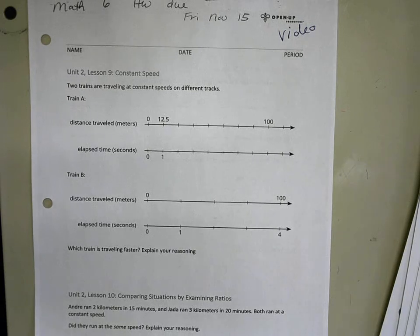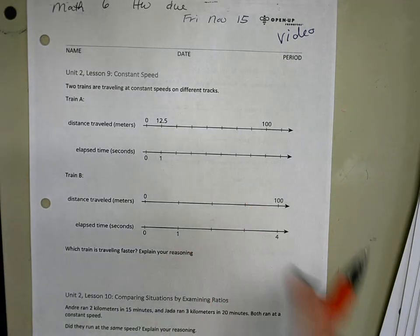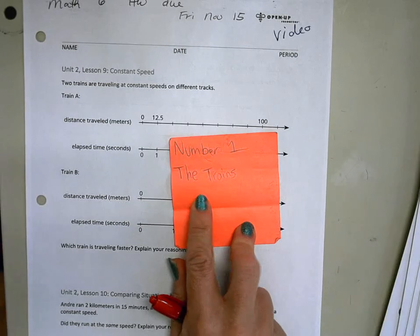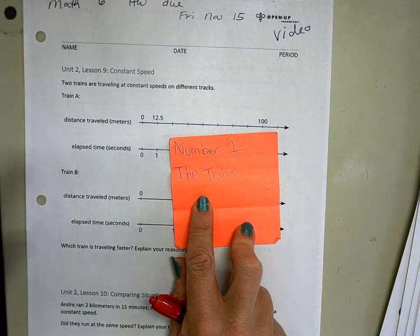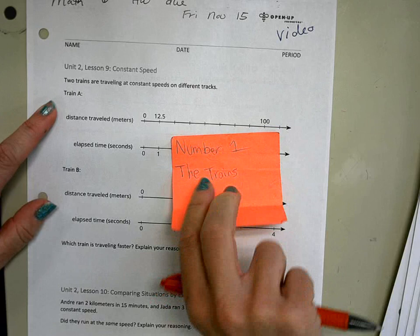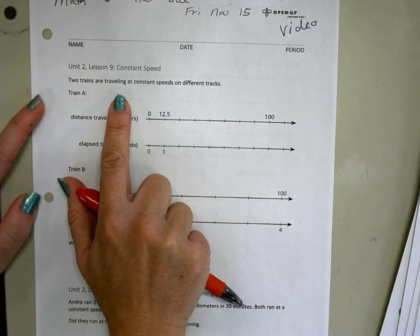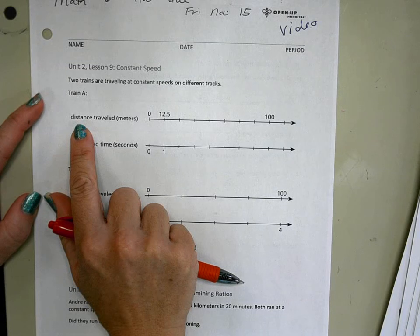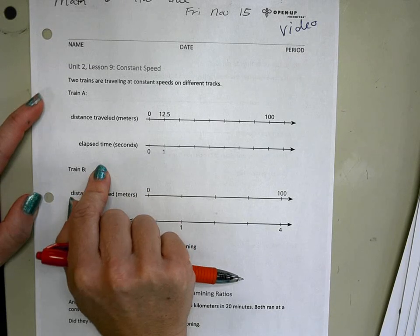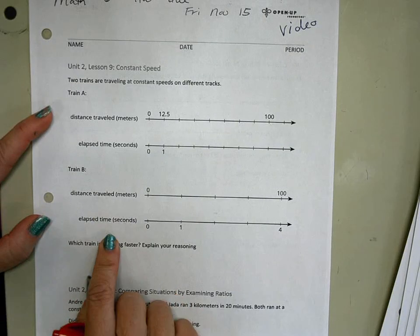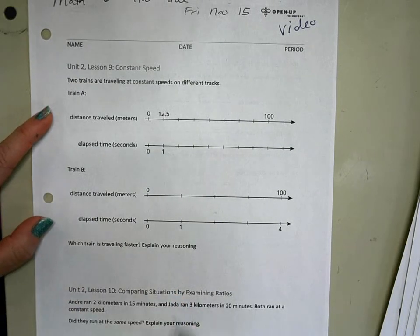We are looking specifically this week at using the double number line. I did go to our shoebox, we did have a suggestion. It said number one, the trains, so we'll do this first problem together. Two trains are traveling at constant speeds on different tracks, so we have Train A, its distance traveled and time, and we have Train B, its distance traveled and time. And the question is, which train is traveling faster?